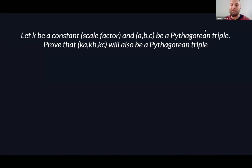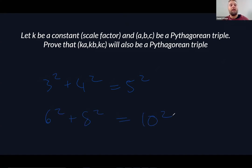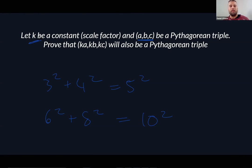It's not called a proof if you just use an example. For instance, 3² + 4² = 5², and then 6² + 8² = 10² — that's an example of this, but it's not proof. A proof means that it doesn't matter what numbers A, B, and C you substitute, or what K value you substitute — you're going to use algebra to prove it works for all values, as long as they are a known Pythagorean triple.